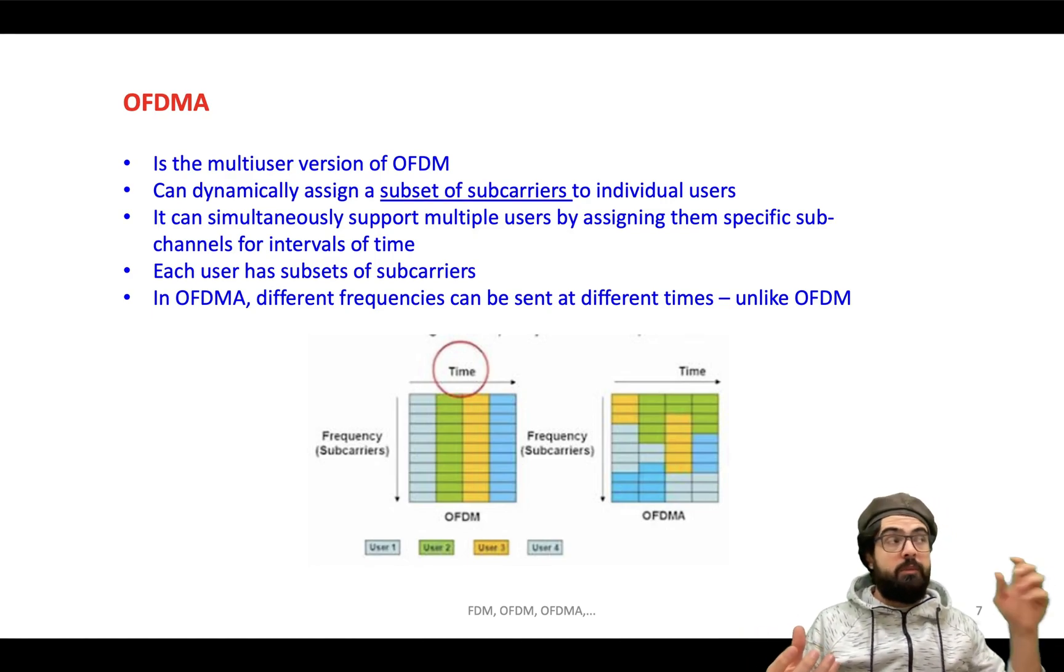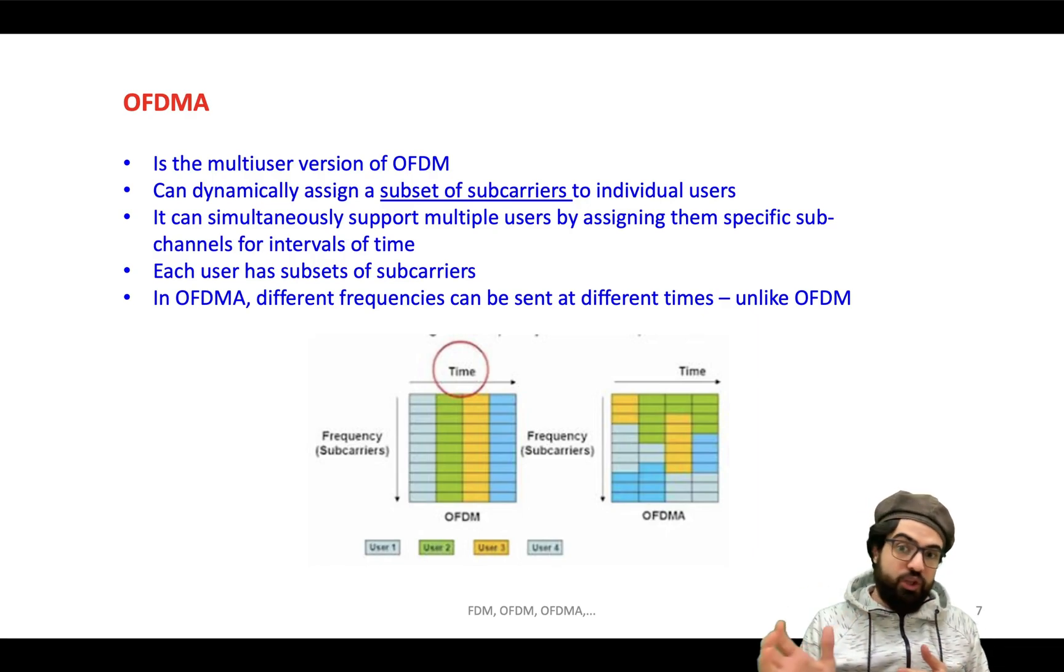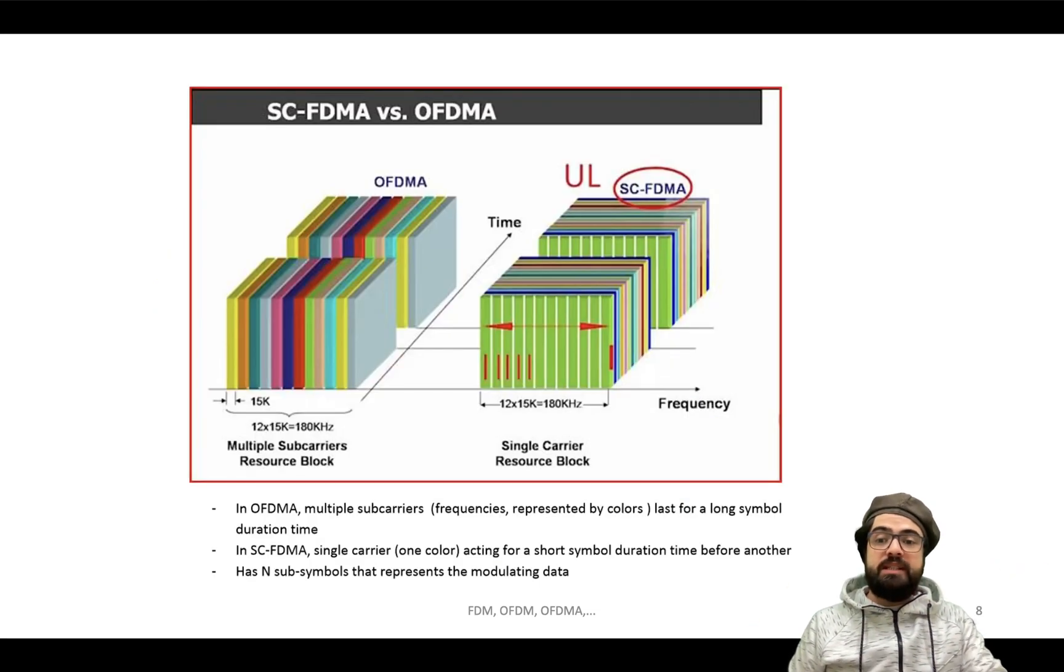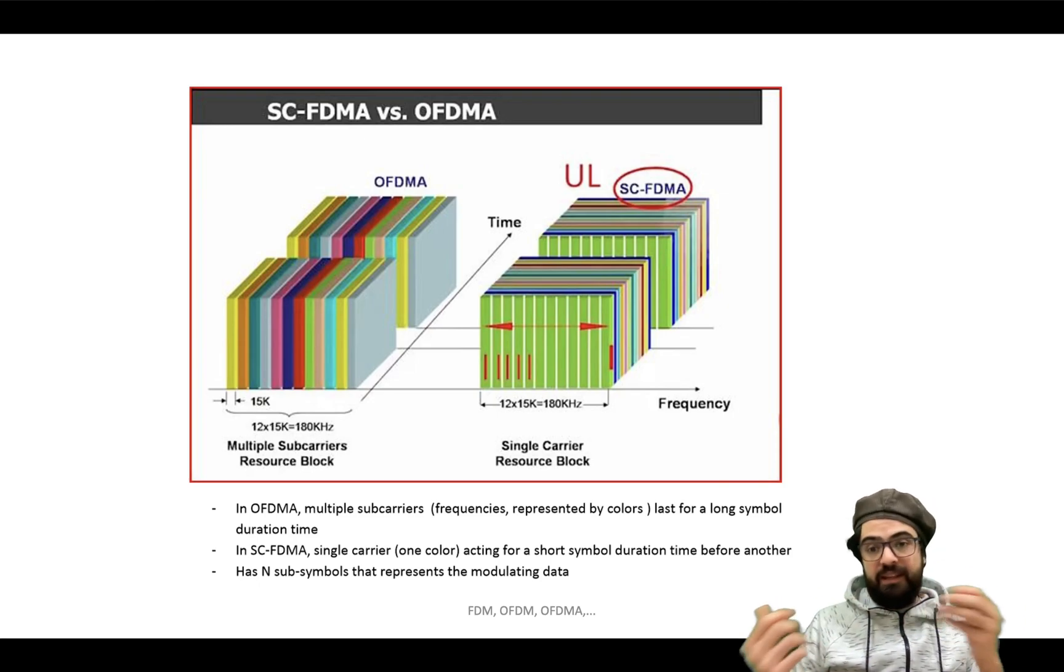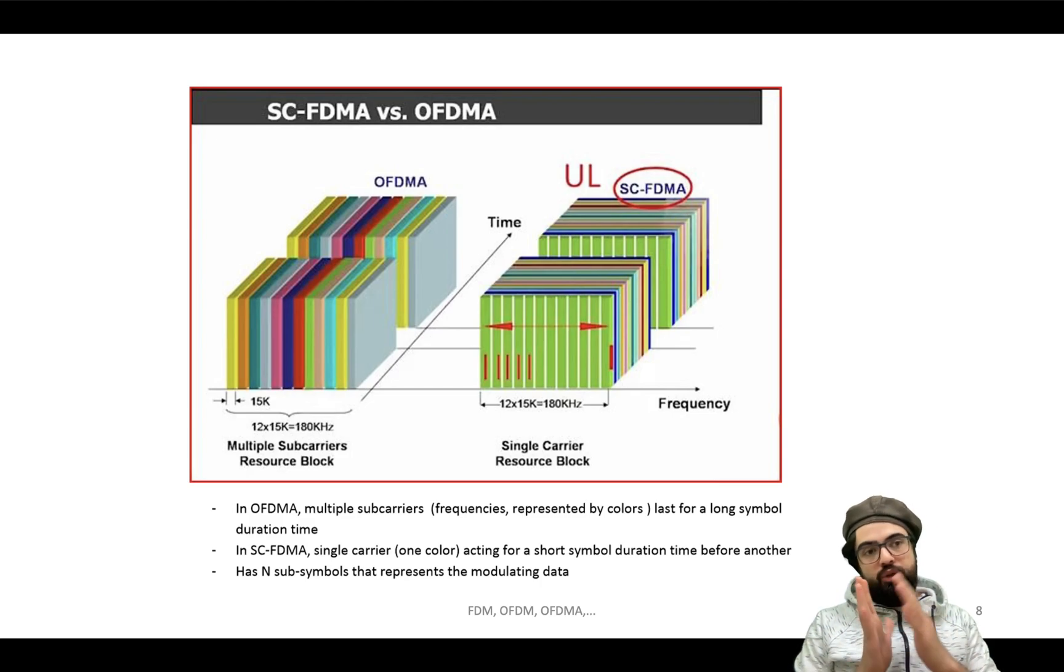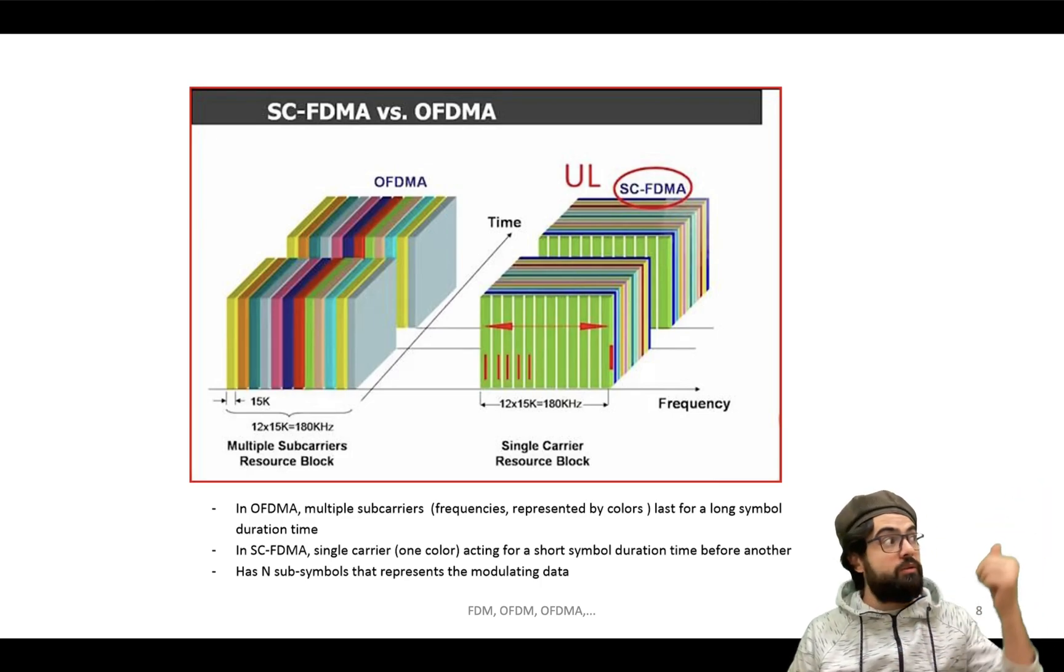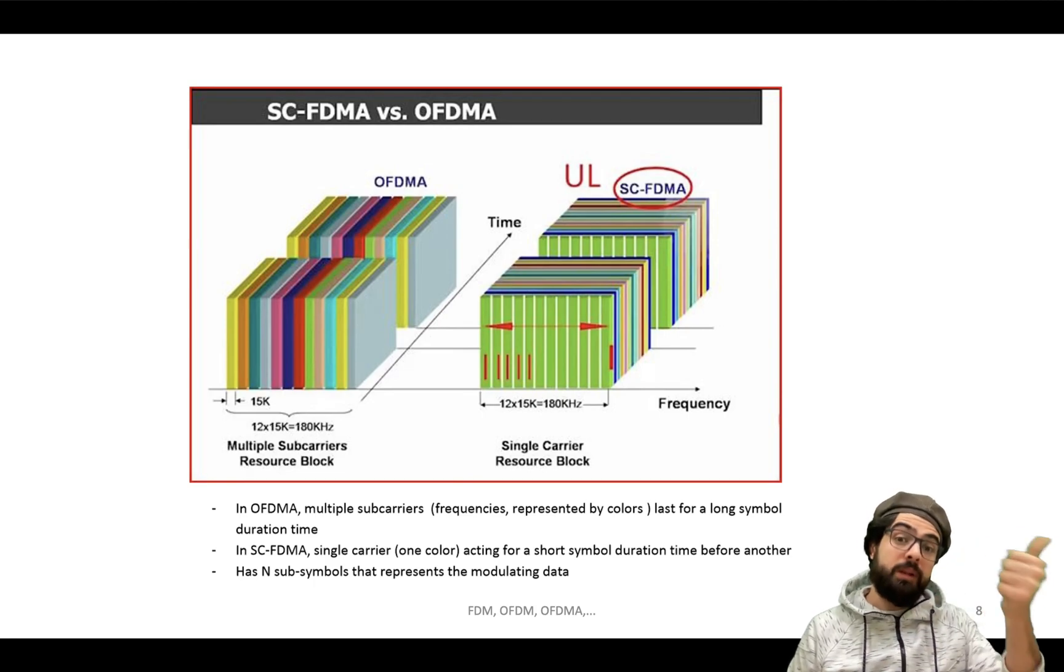However, that amount of battery, actually it's not good for the UE and UE will consume a lot of battery to actually have that power to send the data. For that reason, SC-FDMA - single carrier - is the thing UE or cell phones will use to communicate to base station as uplink.